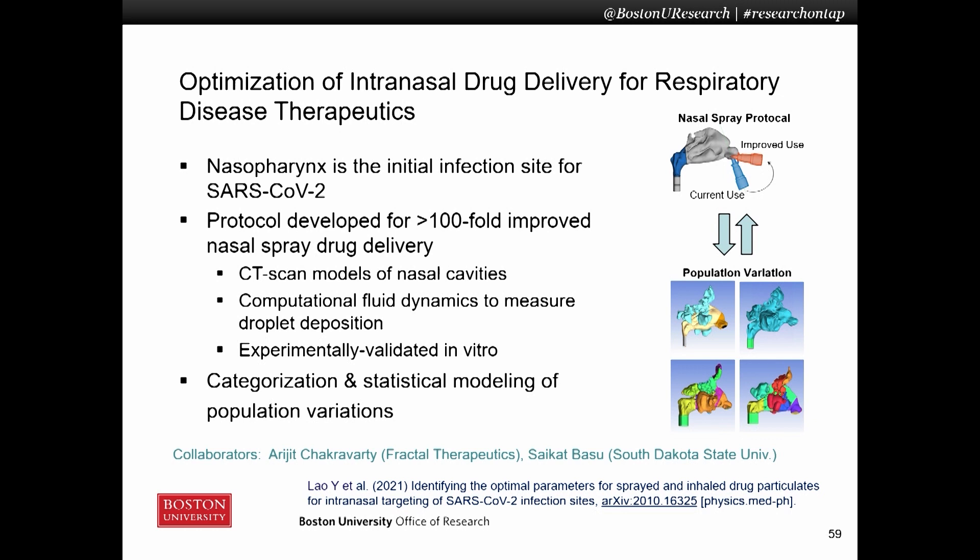In terms of novel agents or repurposed drugs, the route of administration and formulation is also often critical. Given that for COVID-19 the nasopharynx is the initial site of infection, we are working on the optimization of intranasal drug delivery parameters. We developed a protocol for nasal spray use that increases the delivered dose at the nasopharynx by a hundredfold, based on computational fluid dynamic simulations. As an extension of that work, we are characterizing population variations across nasal geometries to further inform drug delivery optimization, and in the future that work may play a role in having more personalized intranasal drug delivery options for other respiratory illnesses.